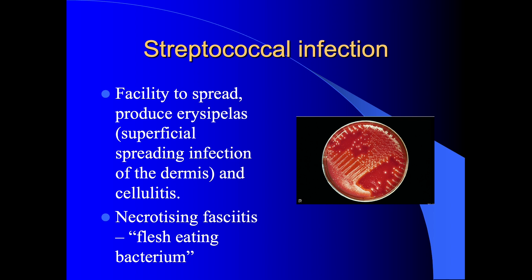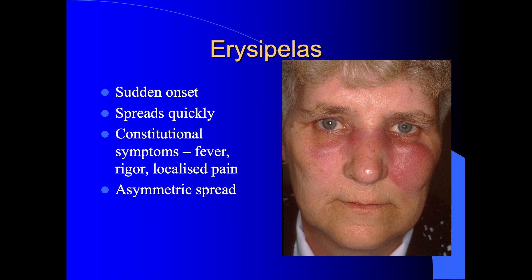Here you can see on a culture plate a growth of streptococci, which has been used to identify the organism and determine its sensitivity. This is a lady who's got erysipelas of the face. It started on the left side with redness, swelling, and tenderness, but spread over the left side and is now affecting the right side. It's associated with constitutional symptoms — fever, rigors, and localised pain. The asymmetrical spread is quite typical of erysipelas.